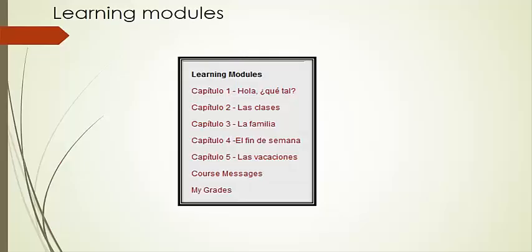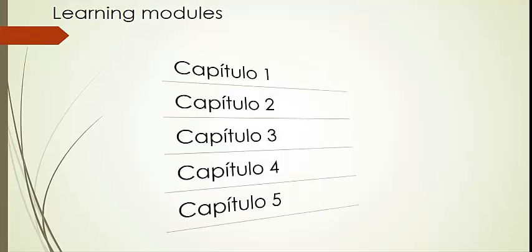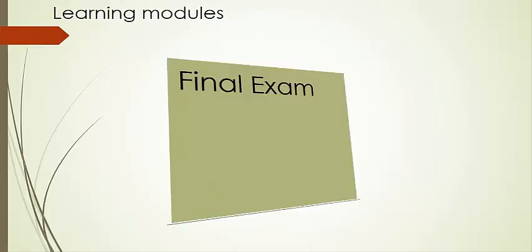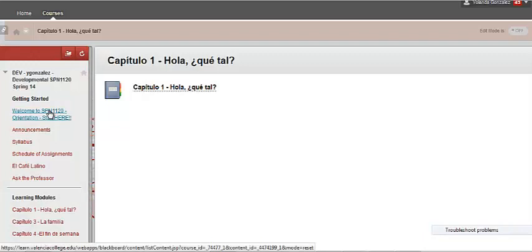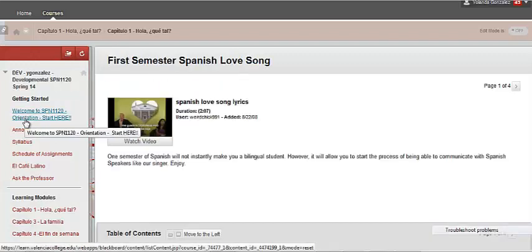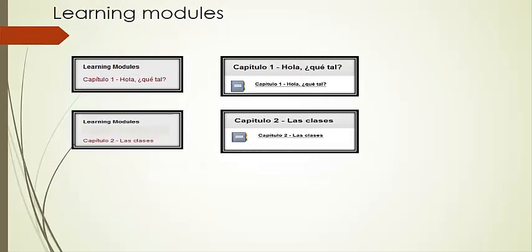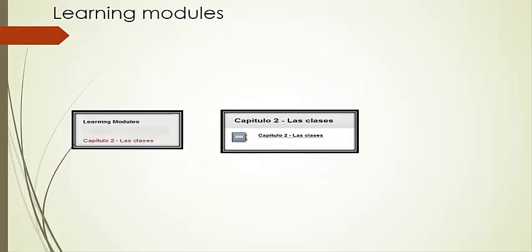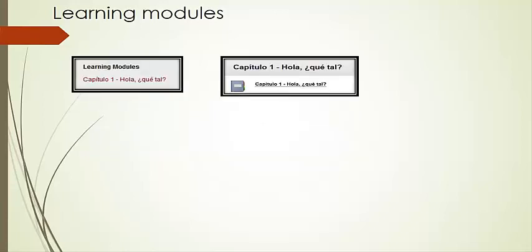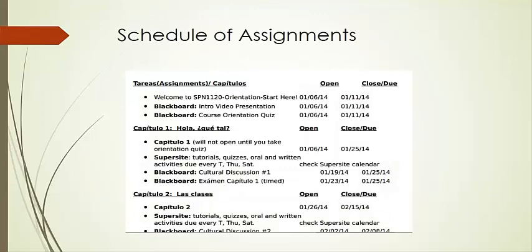The next major section is Learning Modules. It contains six modules covering Chapters 1 through 5 of the book titled Aventuras, and Module 6 is entirely devoted to your final exam. Each chapter module will open after you complete the test from the previous chapter and will close with the chapter test. For example, Capitulo 2 will open after you complete the test for Capitulo 1, and will close after you complete the test for Capitulo 2. Open and close dates for each chapter are specified in your Schedule of Assignments.